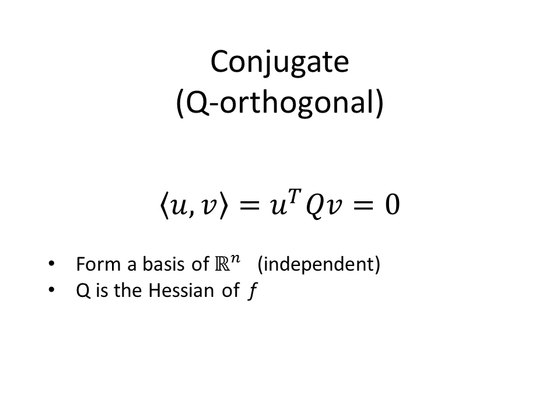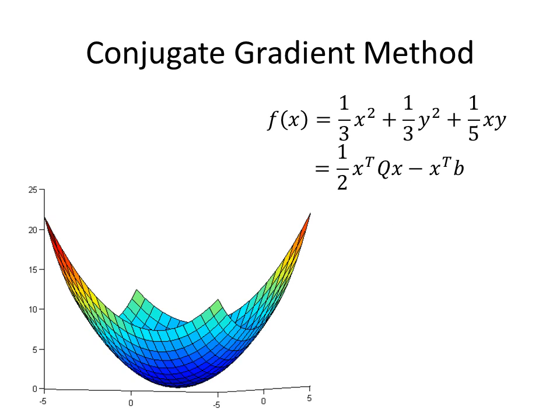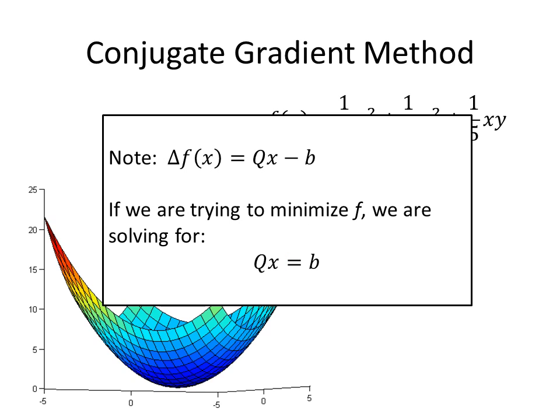A set of n q-orthogonal vectors will form a basis of R^n, meaning they are all independent. In our case, Q is the Hessian of f, the function we are trying to minimize. Specifically, for our initial minimization problem of f(x) equals one-third x squared plus one-third y squared plus one-fifth xy, we can rewrite this function as one-half x-transpose times some matrix times x minus x-transpose times some other matrix. This generalized version of the function will be used to demonstrate the conjugate gradient method. Note that the gradient of this generalized function is Qx minus b. If we are trying to minimize f, we are solving for when this gradient is zero, specifically when Qx is equal to b.